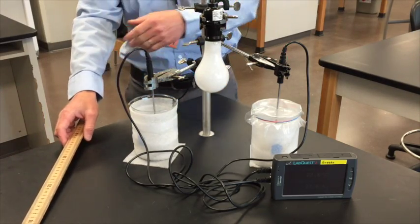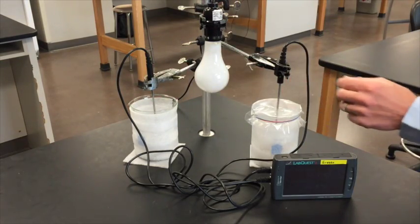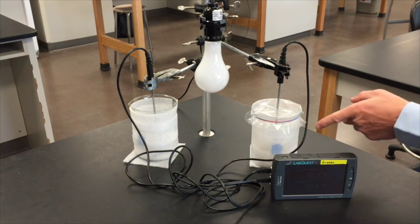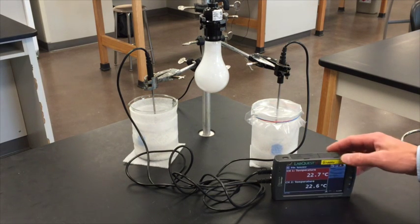You want them both in there vertically. One temperature probe shouldn't be higher than the other. The temperature probes shouldn't be resting against the soil. They should be hovering so that the tip of the probe is about halfway into the beaker.